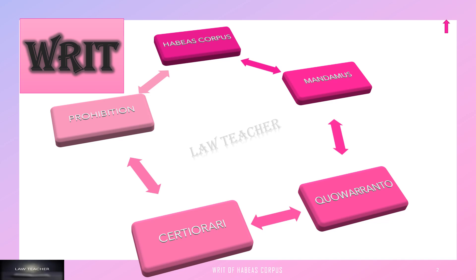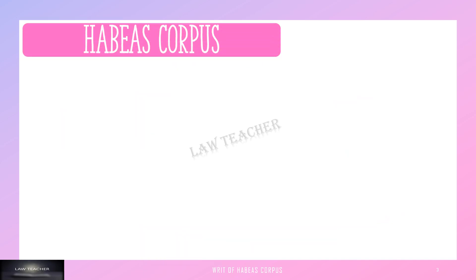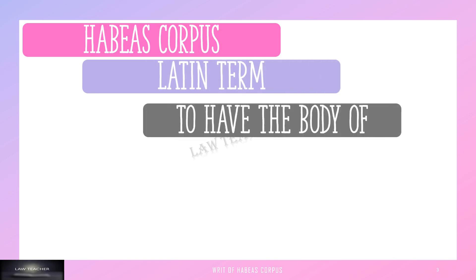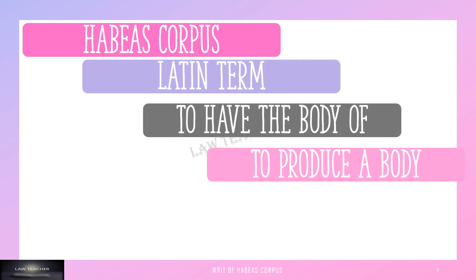So we can start with habeas corpus. Habeas corpus is a Latin term which means 'to have the body of' or 'to produce a body.' This is the most important, most powerful, and most used writ.